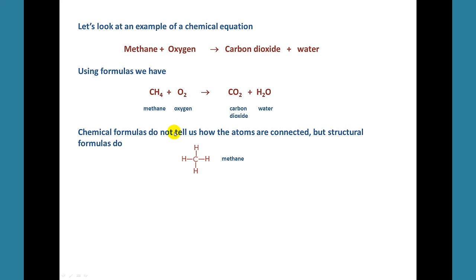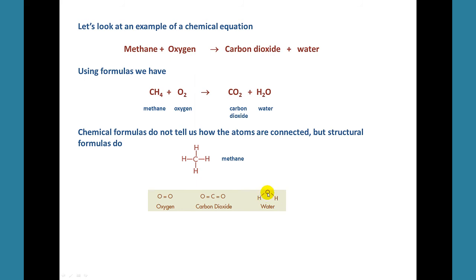Chemical formulas don't tell us how the atoms are connected, but structural formulas do. We see that methane has a central carbon atom with four hydrogens bonded to it. Here is the structural formula for oxygen — two oxygen atoms with a double bond. Here we have the structural formula for carbon dioxide — a carbon with two oxygens both bonded to the carbon. And water has an oxygen with two hydrogens bonded to it.